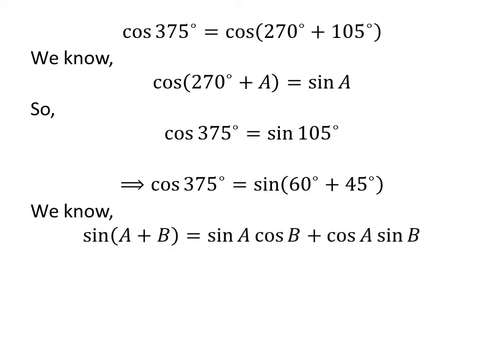We know that sine of A plus B is equal to sine of A times cosine of B, plus cosine of A times sine of B.